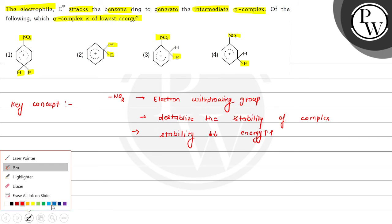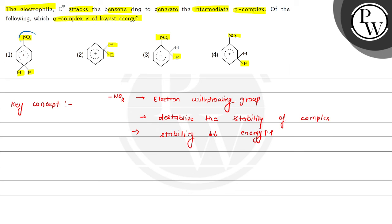So now we can see that of these four complexes, these three are the nitro complexes. That means the electron withdrawing group is attached in these. So the stability decreases and energy increases. And here in this, no electron withdrawing group is present. So here no electron withdrawing group is present.